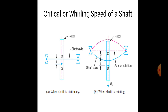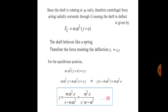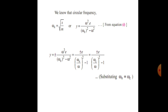When the shaft is rotating, Fc is the centrifugal force acting on the body. The circular frequency omega_n is equal to the square root of S upon M, where S is the stiffness of the shaft and M is the mass of the rotor system. Y is equal to omega squared into E upon omega_n squared minus omega. Omega_n is the natural frequency and omega is the frequency of the shaft.